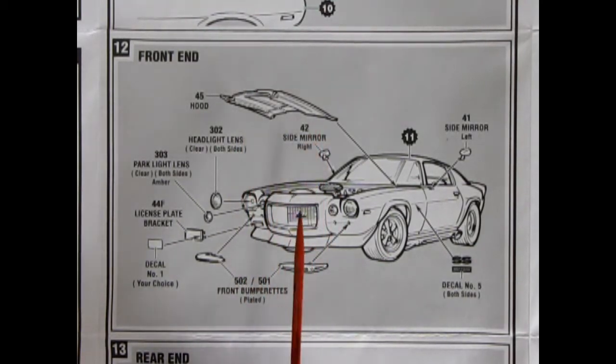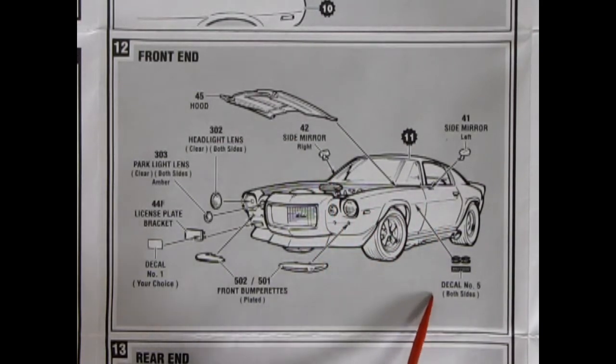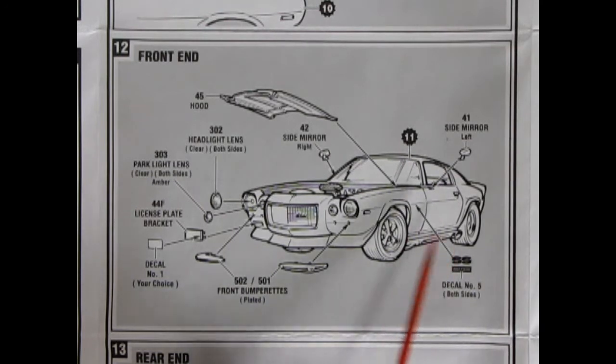So, here is our hood going into the body. The side mirrors left and right. An SS decal, which you can put on there. And then our front bumperettes, which will go there and there, not across the grille.